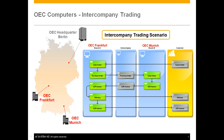OEC Computers have a number of affiliated branches across Germany with headquarters in Berlin. Jason Butler from OEC Frankfurt branch receives a sales order from his customer PC Trade Incorporated. However, there is not enough stock to fulfil the order on hand. Jason is able to review a global stock report and sees that the OEC branch in Munich has enough stock on hand, and in turn triggers an intercompany trade process to purchase the additional stock to fulfil the sales order. Let's see how this process works using intercompany integration for SAP Business One.